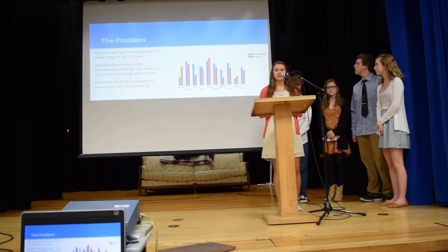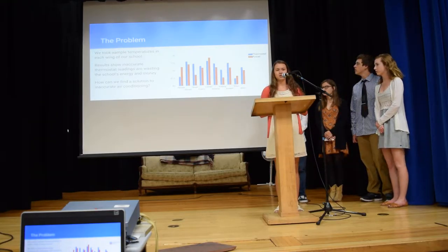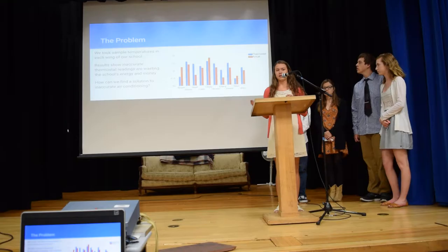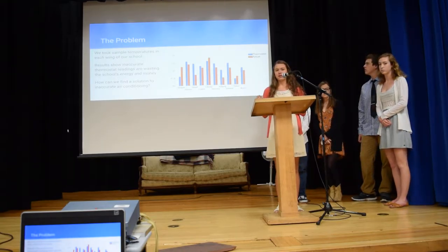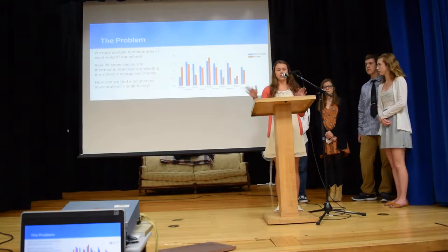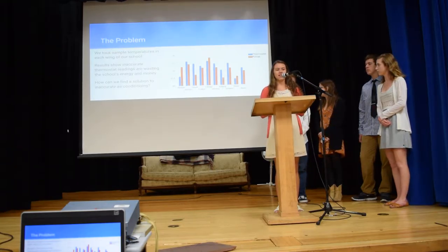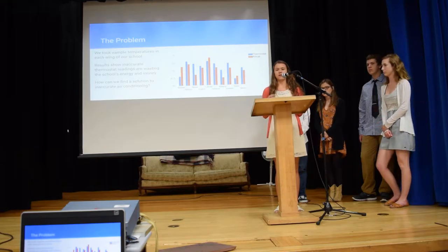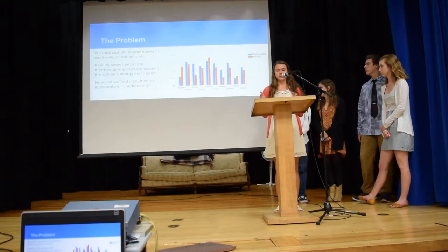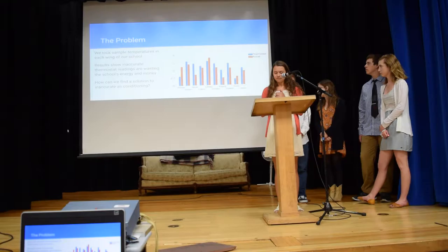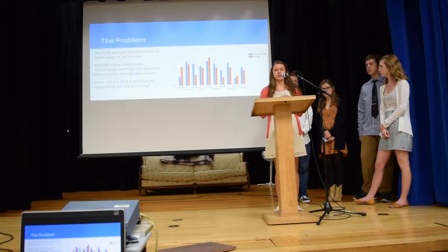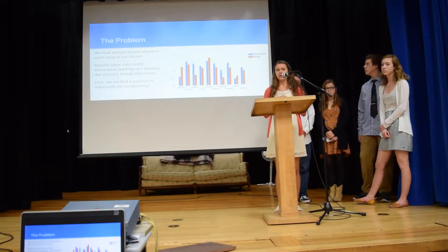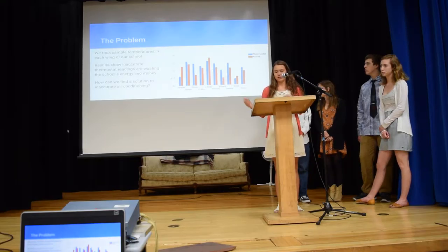The problem we wanted to assess, like Kat said, is the temperature of each of the classes. We didn't feel it accurately represented what was set on the thermostat. So we took the temperature of each class in a sample, one in each wing, and looked at what the temperature said on the thermostat. We found there was a large difference. Because it was inaccurate, we thought we could find a way to decrease energy consumption and decrease the amount of CO2 emitted.